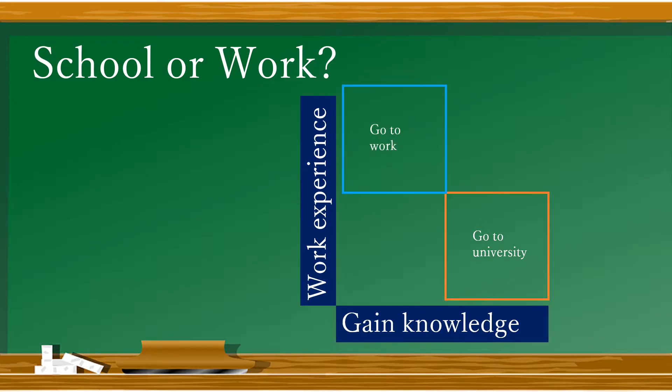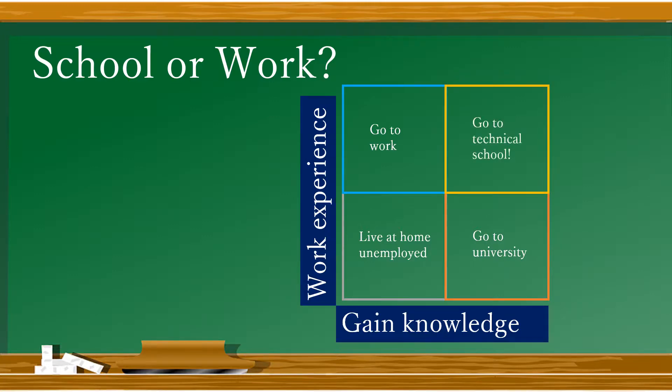In the top left square, we can put the option go to work. You may gain work experience, but miss out on a lot of the benefits of a formal education. Let's say you want to do neither — then you might choose to live at home, unemployed. But if you want the best of both worlds, you might pick technical school, where you can learn about business but also get some work experience through an internship.